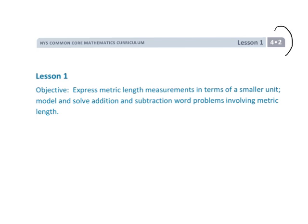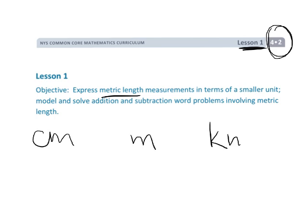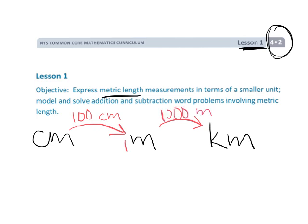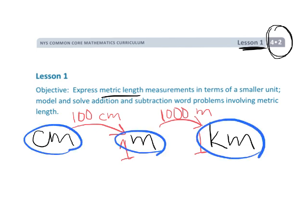This is fourth grade, module two, lesson one. We're going to be talking about the metric system in terms of length, focusing on centimeters, meters, and kilometers, and how these are related. There are 100 centimeters in one meter, and 1,000 meters in one kilometer. We want students to become familiar with these three basic measurement lengths.